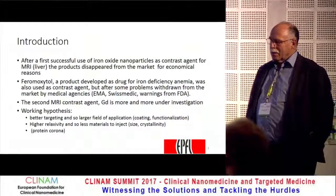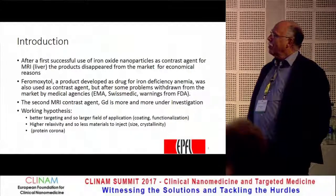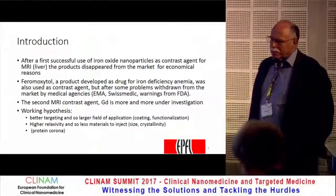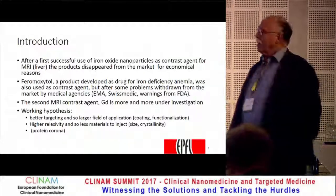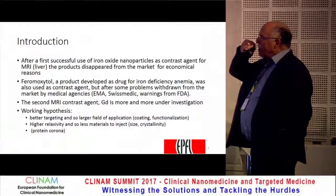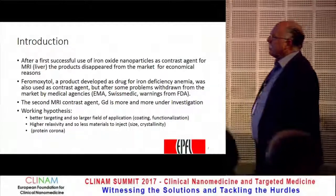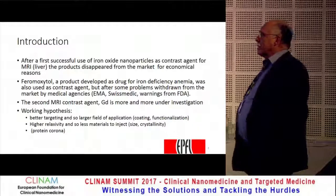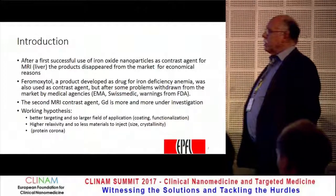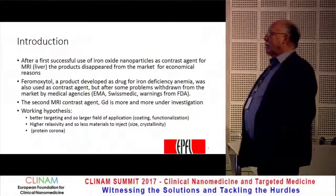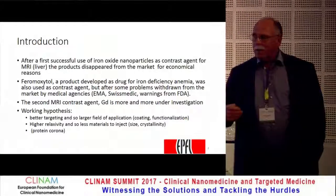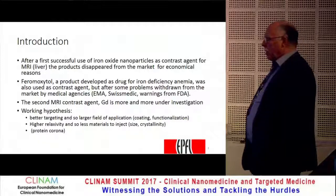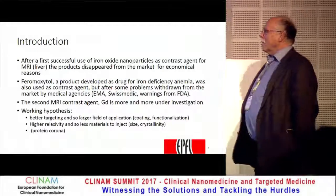Secondly, it was T2 contrast, the black spot, which is also not the optimum for our clinical doctors. Then another product, ferumoxytol, is produced for iron-deficiency anemia, for the treatment of this disease, and is now used more and more as a contrast agent for MRI because there are no other products on the market. But we have some problems with this product — it's withdrawn from the market by medical agencies because there are severe problems. It's not on the market in Europe, not in Switzerland, and there are strong warnings from the FDA for its applications.